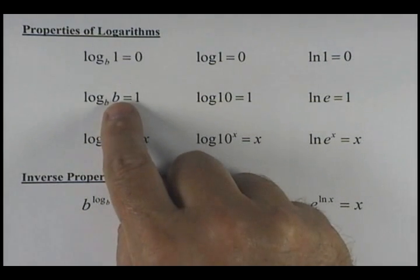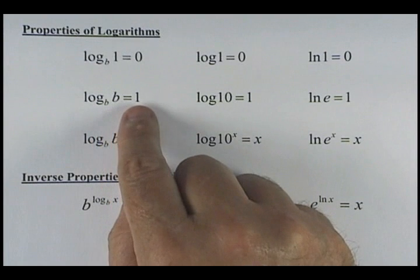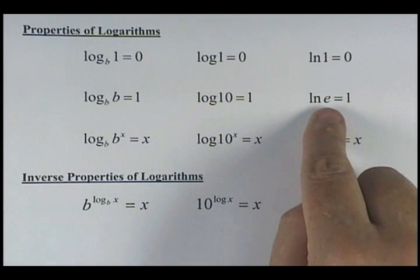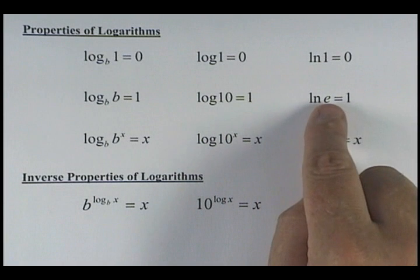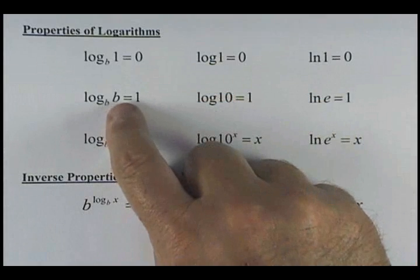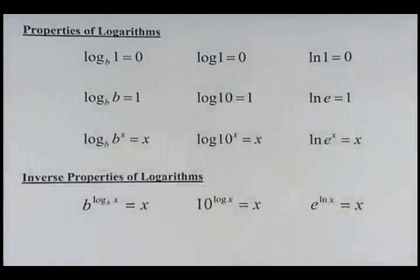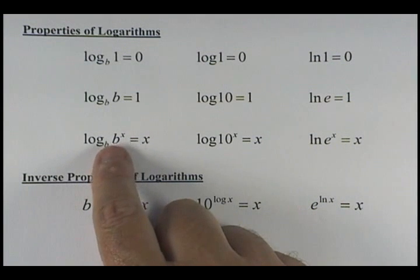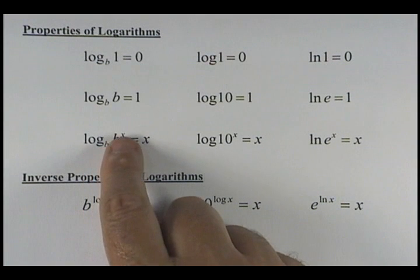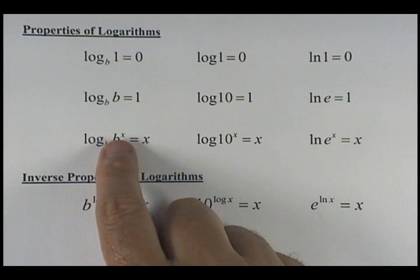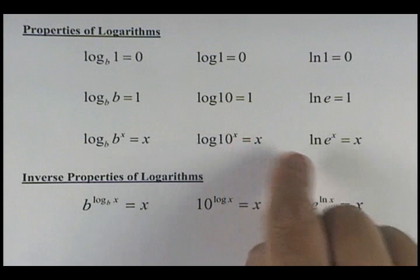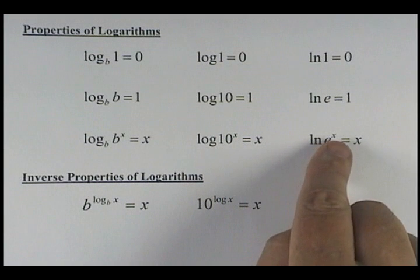The next property: when you've got the log base b of b to the x, your bases are the same, so it equals x — whatever the exponent is. With an understood base of 10: log of 10 to the x equals x. With the natural log: ln of e to the x equals x. The inverse properties: b to the log base b of x equals x. For example, 8 to the log base 8 of 4x equals 4x — because base 8 and base 8 match.